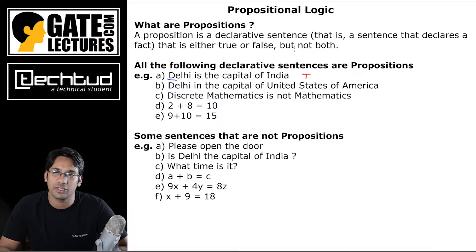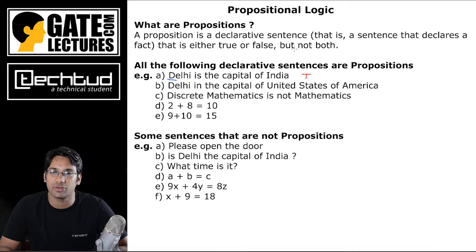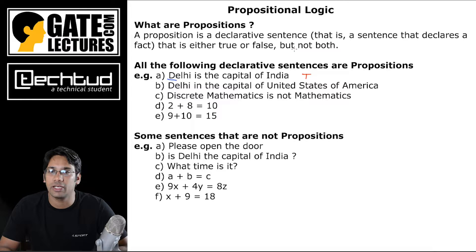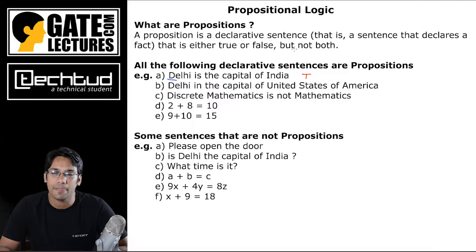If I say '2 plus 8 is equal to 10,' it is a proposition and the truth value is true. If I say '9 plus 10 is equal to 15,' it is still a proposition because I am declaring that 9 plus 10 is equal to 15, but the truth value is false. In any case, if you can assign a true or false value to a declarative statement, that statement is called a proposition.